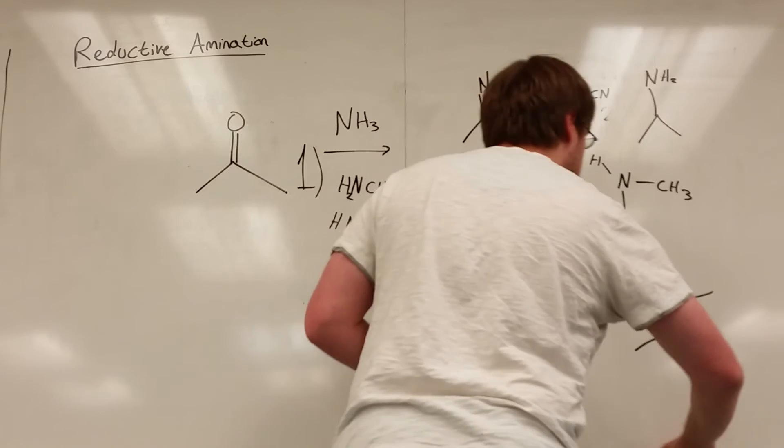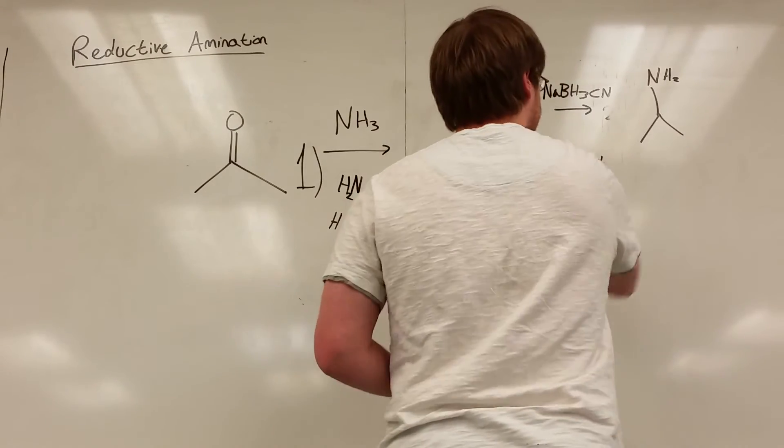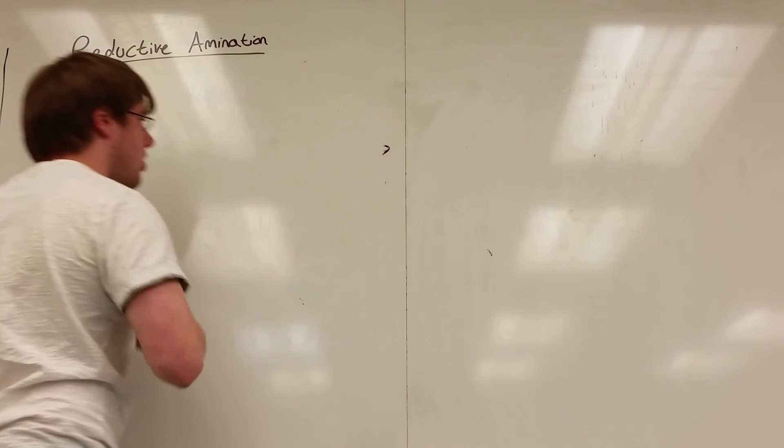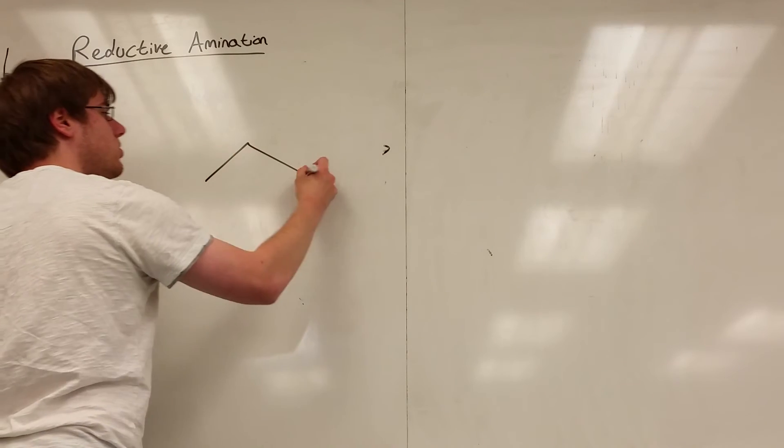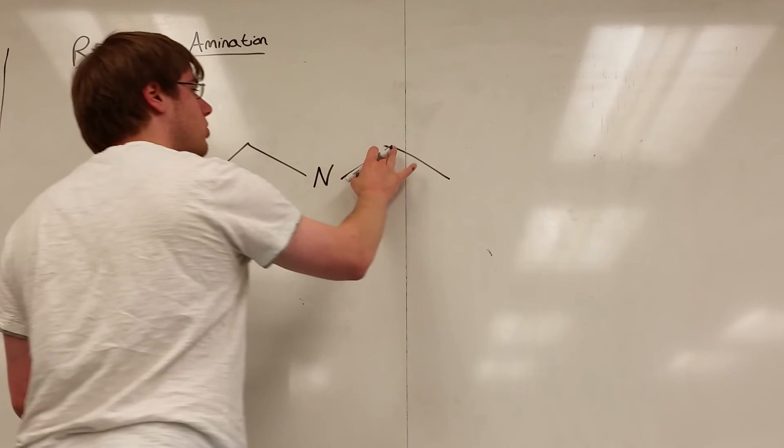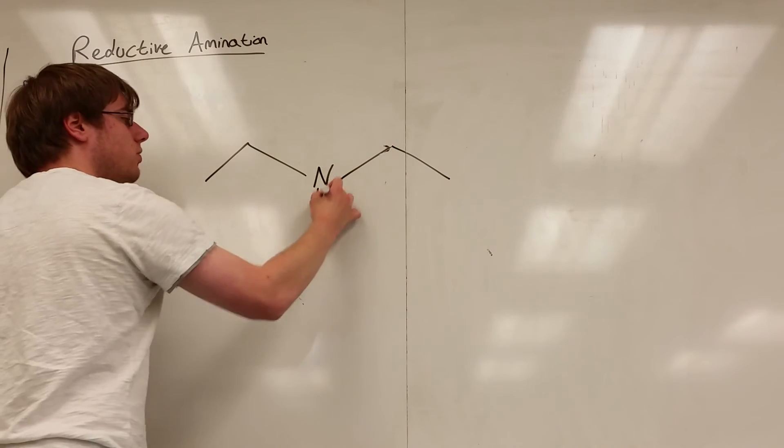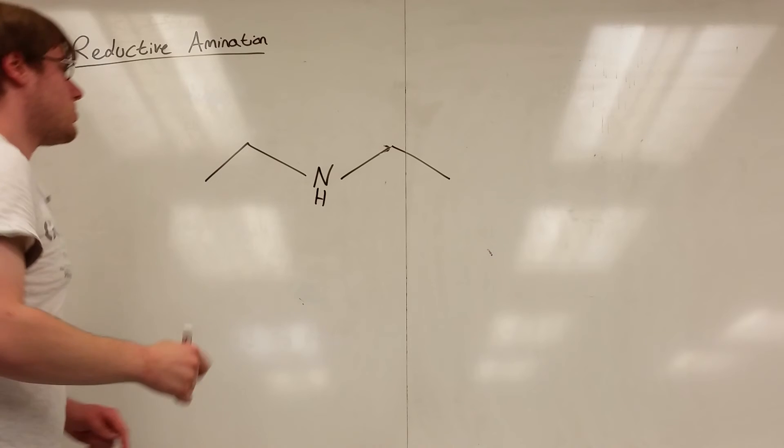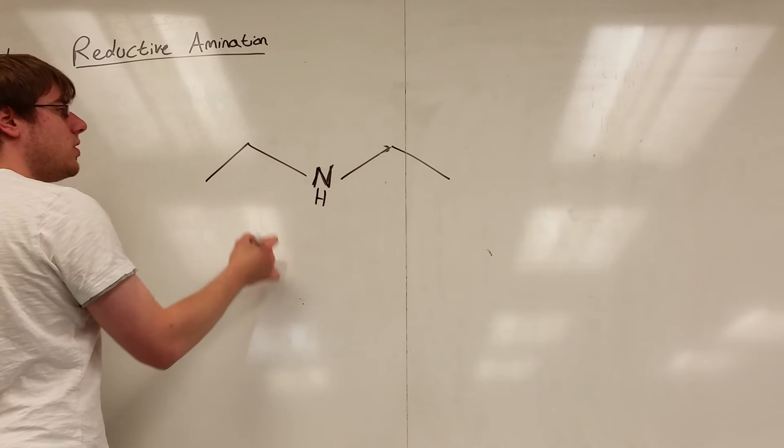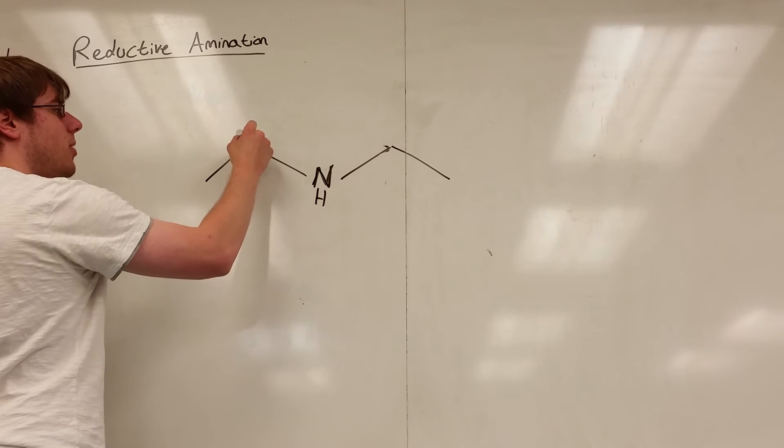So basically the way you can use this is if you ever see in your synthesis a structure that has, say I have a carbon chain like this, I have one two nitrogen like that, and then tell you make this from four carbons or less. What you do is all you have to do is find the nitrogen that's part of the chain and choose a carbon that's single bonded to it, let's say this carbon.